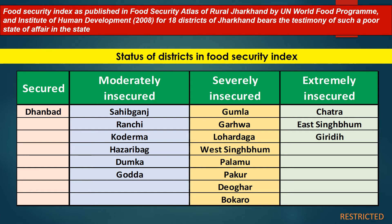The second category is 'Moderately Insecure', meaning there is medium availability of food grains and the status of quality is okay without any major issues. The districts falling in this category are Saheb Ganj, Ranchi, Koderma, Hazaribagh, Dumka, and Godda.